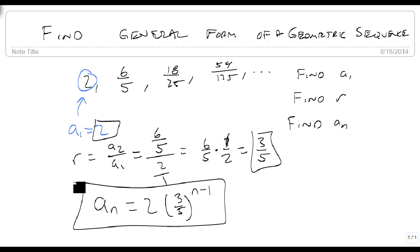So that's how we find the general form of a geometric series. Find A1, find R, and then plug them into the general form. So the default general form is A1 times R raised to the n minus 1 power.